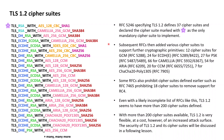Other RFCs released over the years also prohibited some of the cipher suites introduced earlier, such as RFC 7465 which explicitly forbade the use of cipher suites that used the RC4 stream cipher for the encryption of the application data.